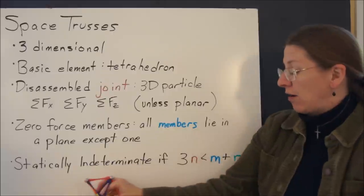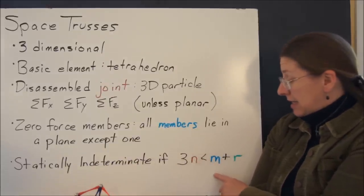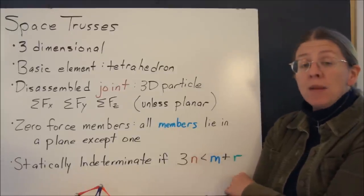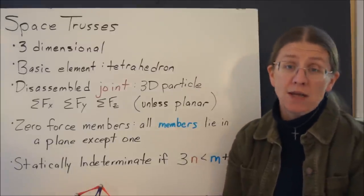If you have a situation where three times your number of joints, this is how many equations you get that are linearly independent, is less than the number of members plus the number of external reactions, then all bets are off. You know it's not statically determinate.